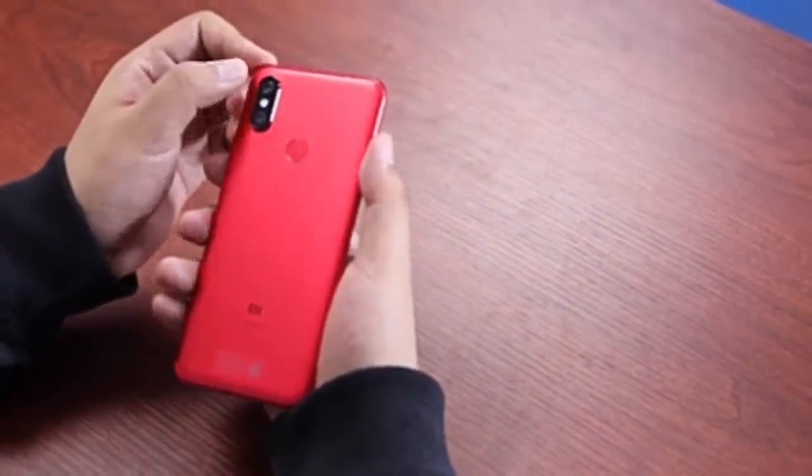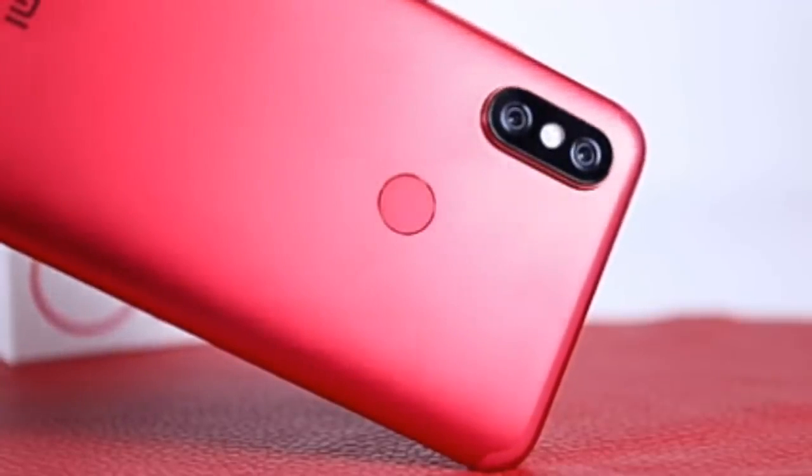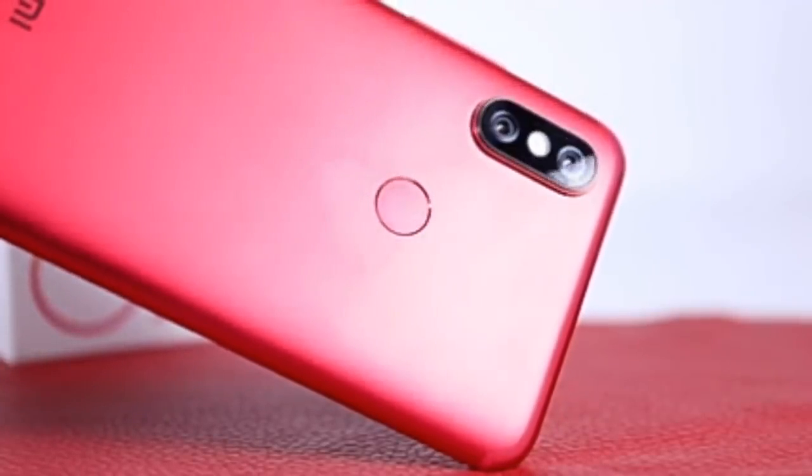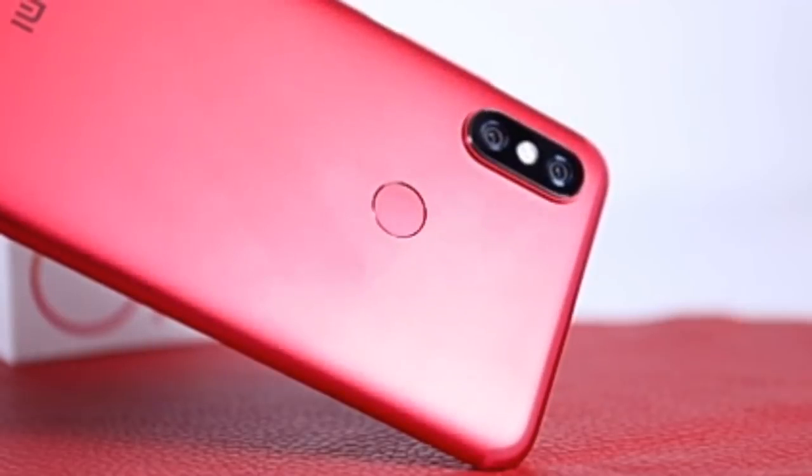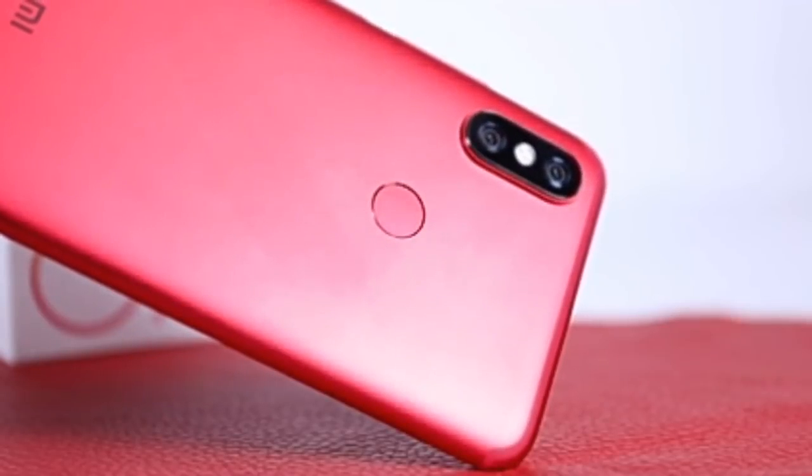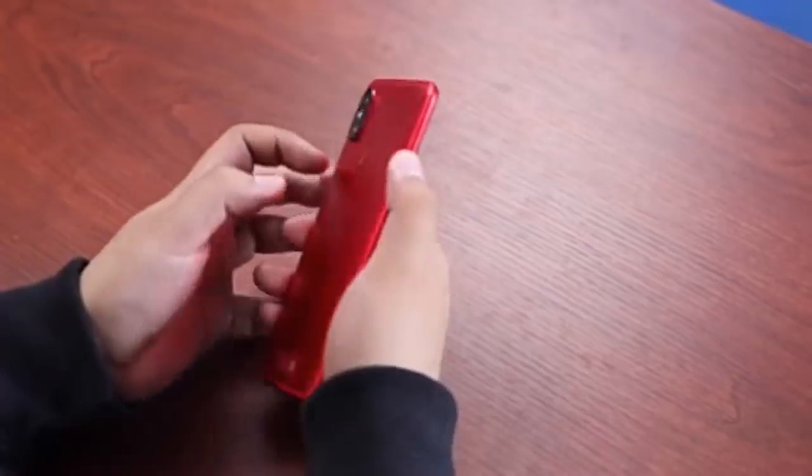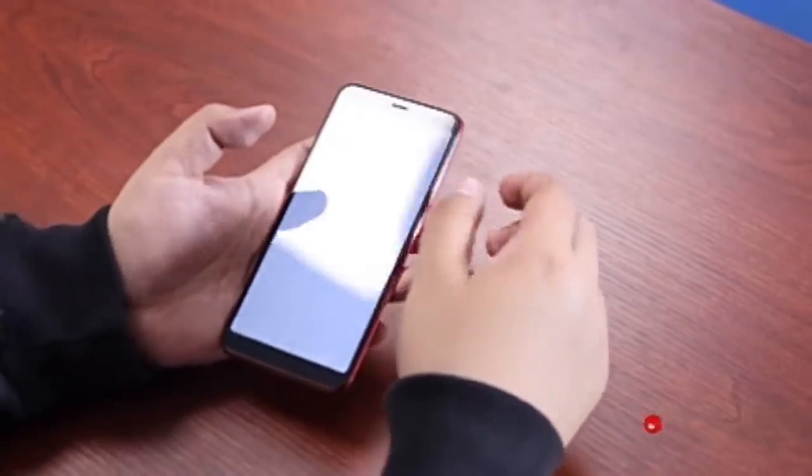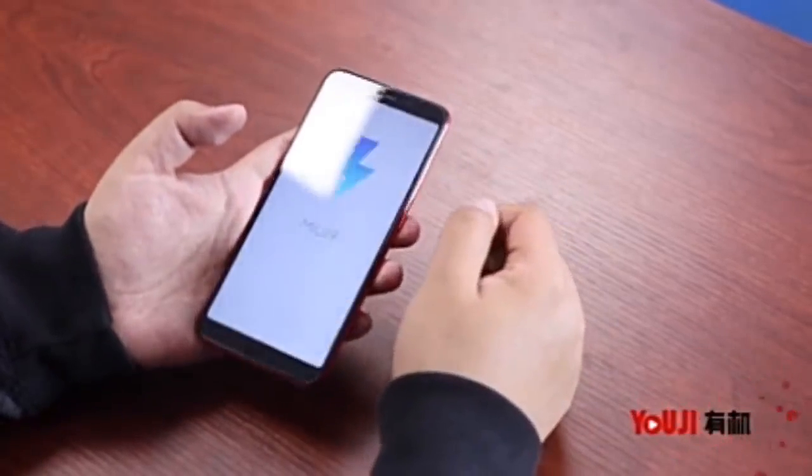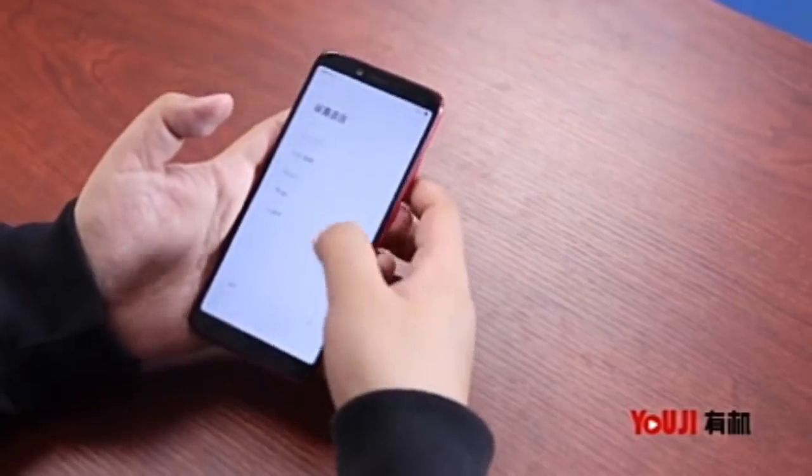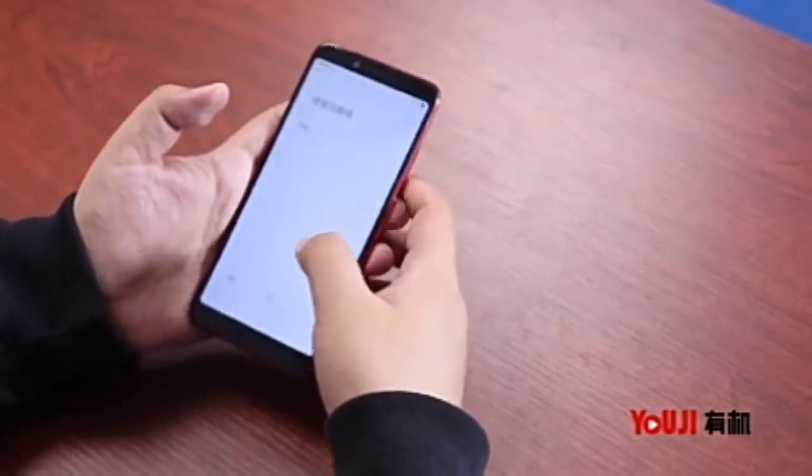For shooting selfies, it features a Sony IMX376 20 megapixel front camera equipped with a soft light LED flash. The AI allows the front-facing camera to shoot best quality selfie shots as it can recognize 12 kinds of self-portrait scenes. Other features of the front camera include AI Beauty and AI Night Self Timer.